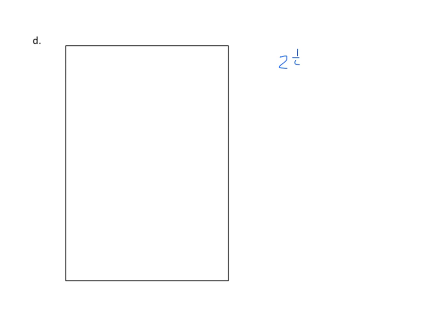Let's do one more example. You're going to have to take my word about the measurement — measure to the nearest quarter inch. This one measures two and one-fourth inches along the top and three and one-fourth inches along the side. Again, we'll decompose, taking the whole number portion plus the fractional part, and draw a line partitioning that. Along the side we have three and one-fourth; partition that as well. Now we'll multiply.